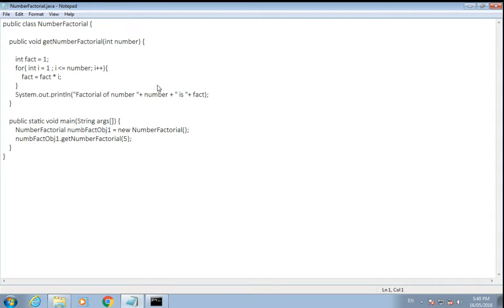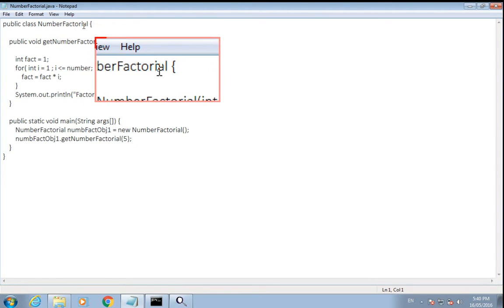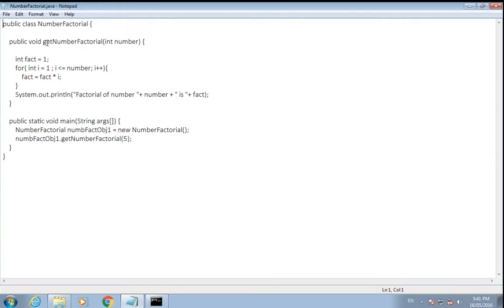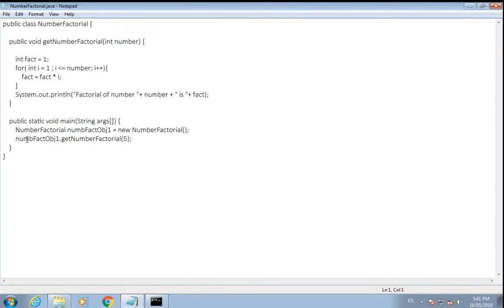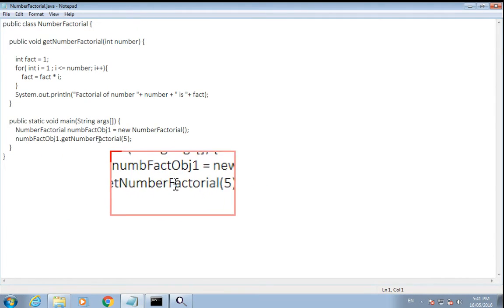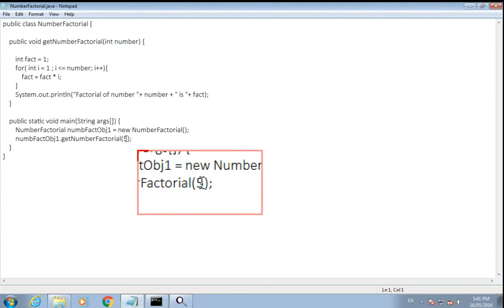I wrote a program to find out the factorial and named the class NumberFactorial. And I wrote a separate method named getNumberFactorial, and to that method I passed the number 5. Here you can see I created an object of this class and called the getNumberFactorial method and passed value, that is 5.